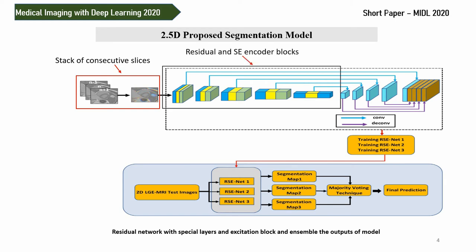In the second step, we introduce residual blocks and squeeze-and-excitation blocks on the decoder side of our proposed model, and stack these blocks with an equal number of feature maps using a special convolutional layer at the decoder side. This special convolutional layer abstracts the contextual information in order to produce a better segmentation map.